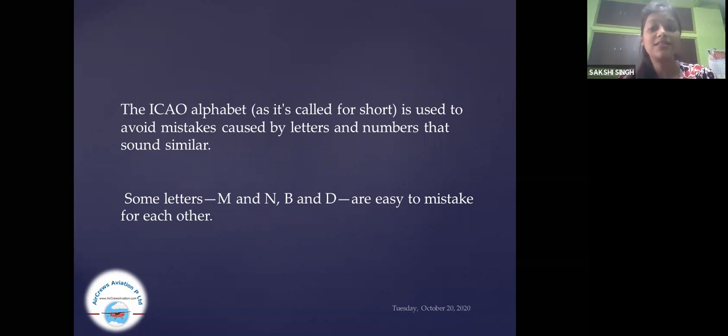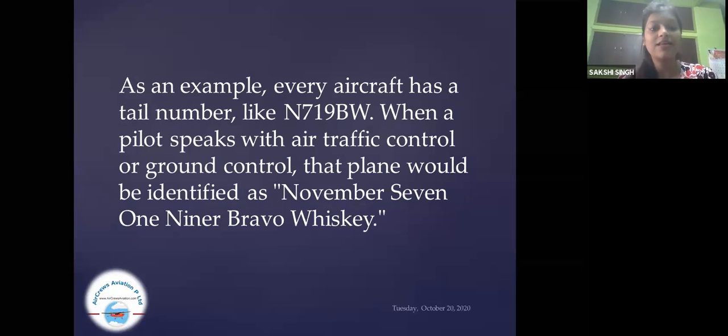Generally, pupils speak another letter and they got recognized like M and N. It may be a little issue. As an example, every aircraft has a tail number like N719PW. When a pilot speaks with air traffic control or ground control, that plane would be identified as November 719PW.